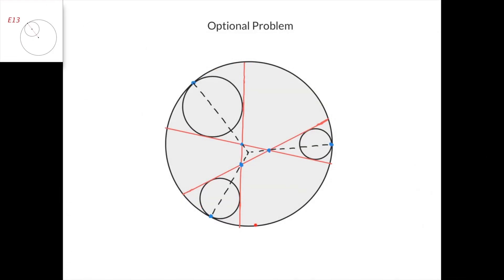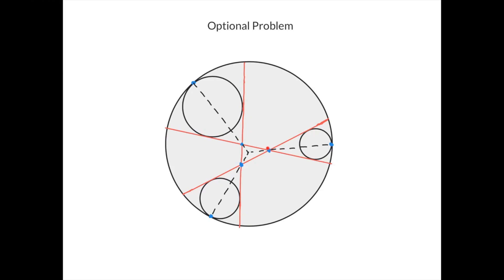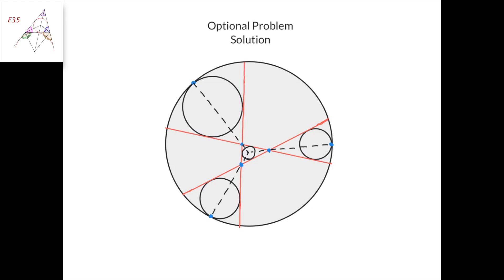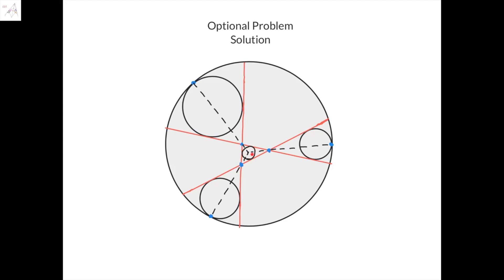Here's the optional problem. We have a large circle and three small circles that are tangent to the large circle at this point, this point, and this point respectively. We take the common external tangent line to this circle and this circle, this common external tangent line, and this common external tangent line. We intersect these three lines at three points and connect them, and we need to prove that these three connecting lines intersect at one point. The key to the solution is to construct the incircle of this triangle. Now note that this point is the external center of homothety for this circle and this circle, and this point here is the internal center of homothety for this circle and this circle. Therefore, this is the Monge line for this circle, this circle, and this circle. Hence this line passes through the internal center of homothety of this circle and this circle.